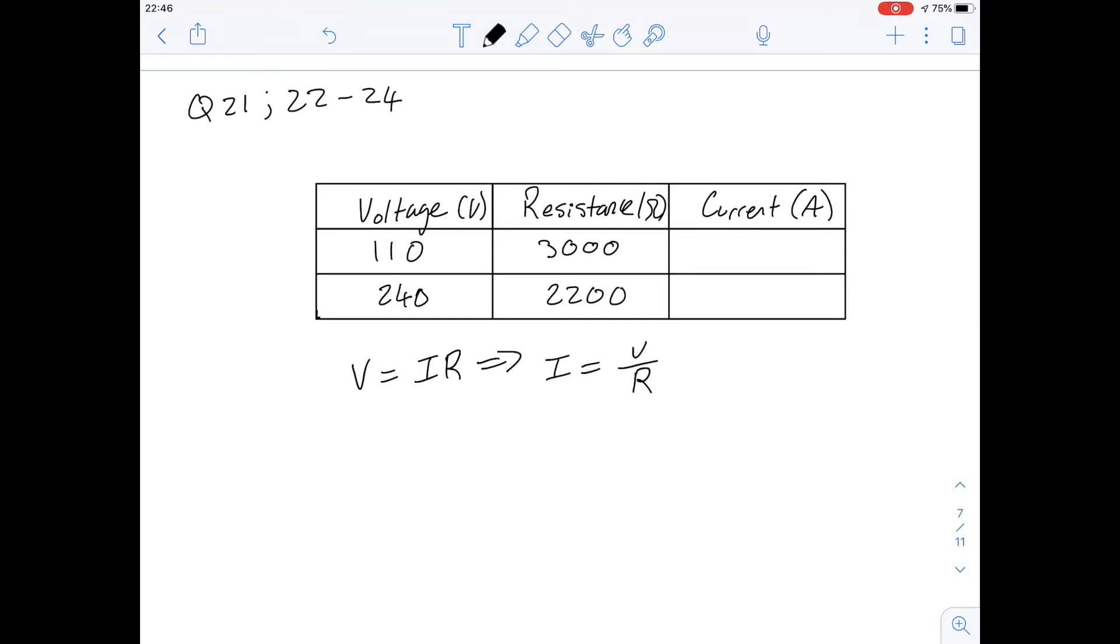So we work out the two currents then. For the first one it'll be 110 over 3000 which is probably best to just approximate and it'll be around 0.04. And then for the second one it's going to be 240 over 2200 so we can simplify that to 24 over 220 or 12 over 110, so we can approximate that to 0.12.